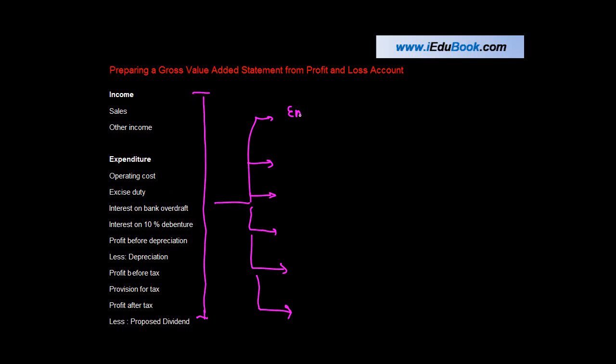The first category is that of an employee. The second one was directors. The third one was government taxes. The fourth category was long-term finance providers.